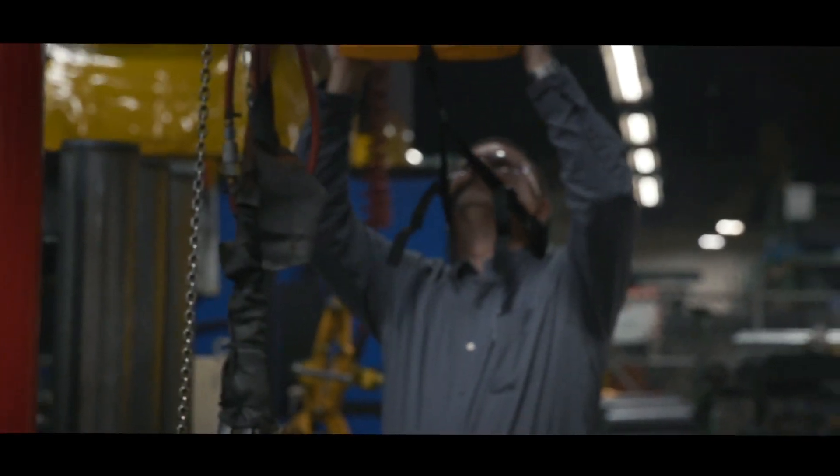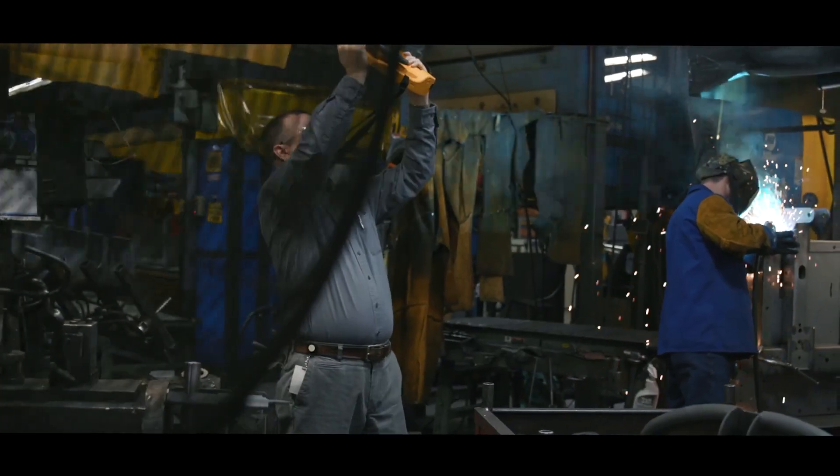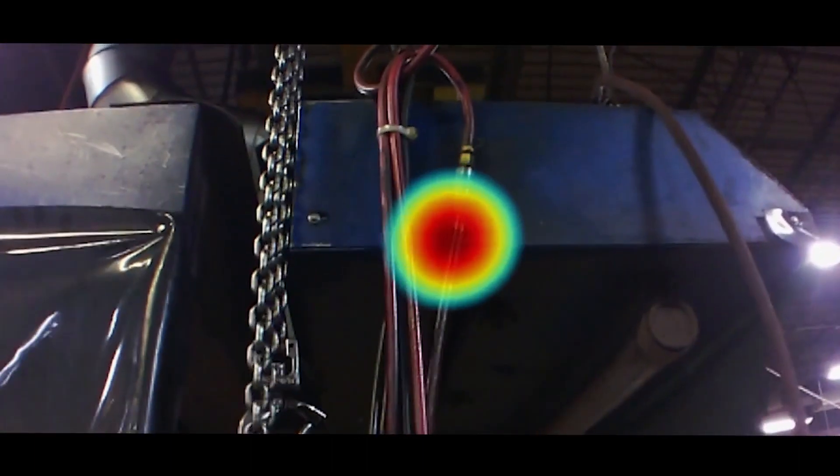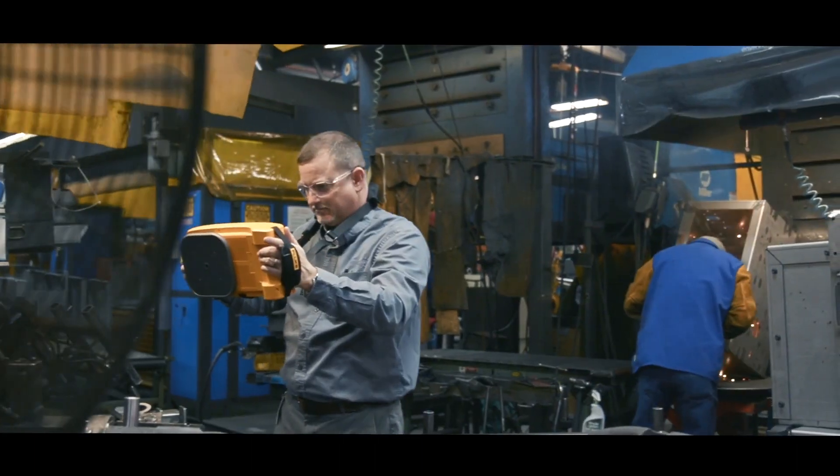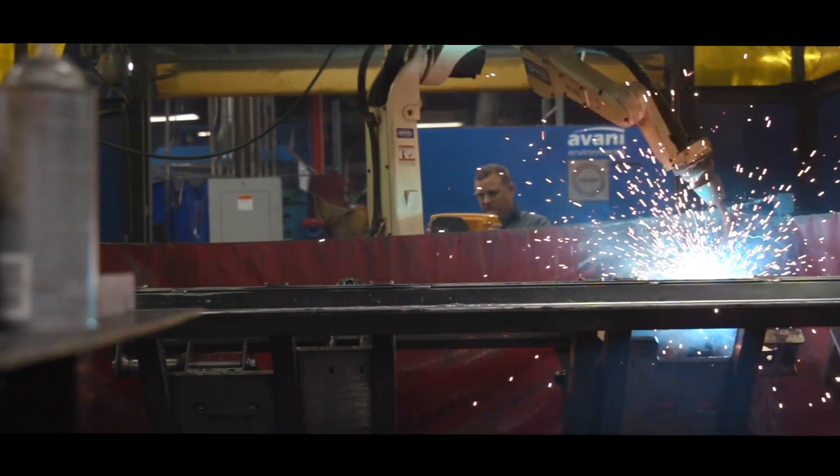The Fluke II-900 Sonic Industrial Imager works in noisy places without having to shut down the line. Scan large areas quickly so you can find leaks much faster and improve your bottom line.